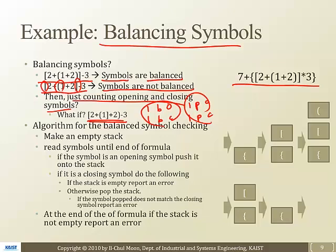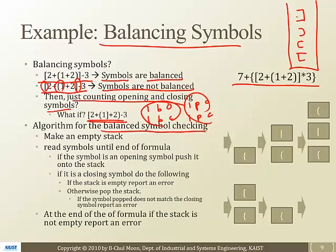The algorithm to check the balancing of symbols is very simple. We are going to make an empty stack and read in symbols until the end of the formula. We are going to put symbols like brackets here — opening brackets and opening parentheses — and then parentheses closing and brackets closing.